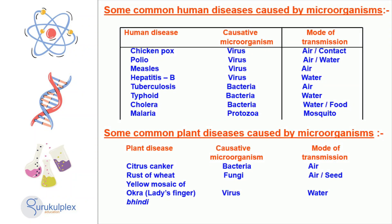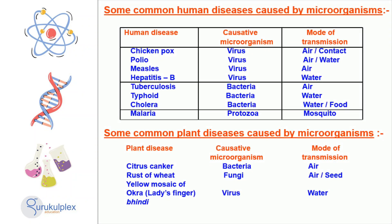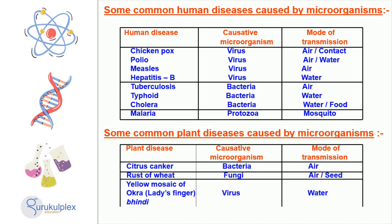Microorganisms are ubiquitous and their presence can be both beneficial and detrimental. Some common illnesses that humans can contract from microorganisms are chicken pox, polio, measles, hepatitis B, tuberculosis, typhoid, cholera, and malaria. For plants, some common microbial diseases are citrus canker, wheat rust, and okra bindi yellow mosaic. Various modes of transmission exist for these illnesses. It is essential to be aware of microorganisms and associated illnesses so as to maintain good health.